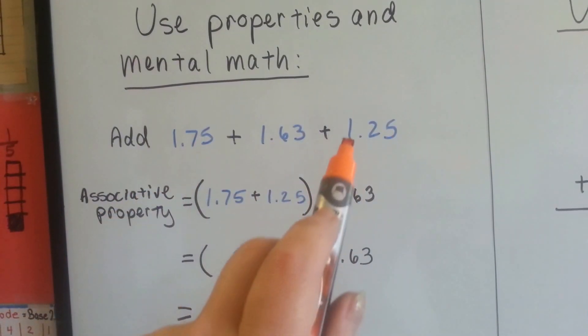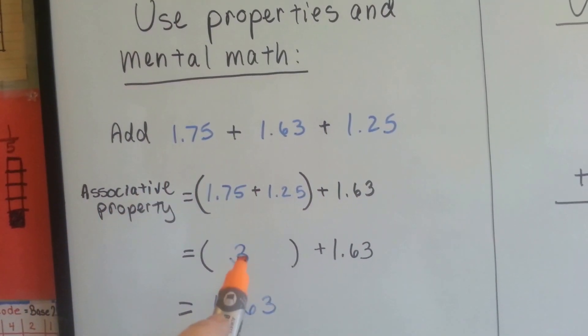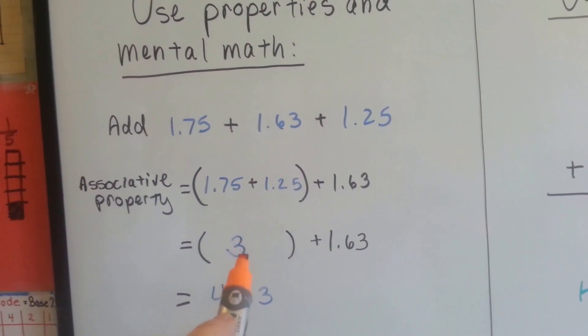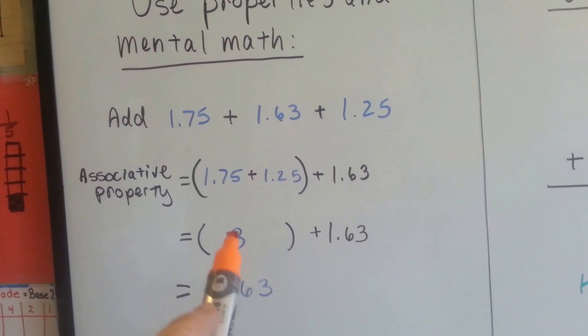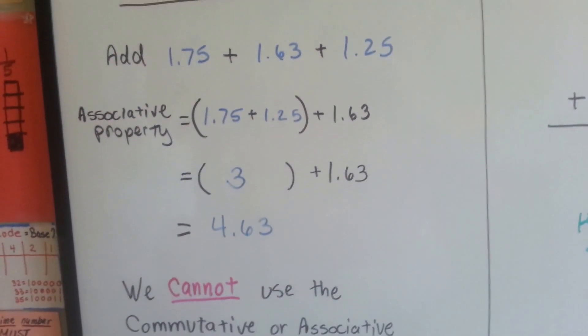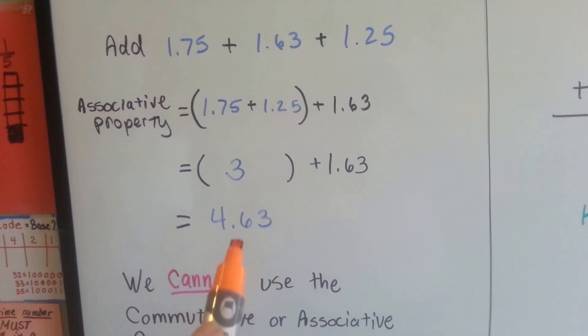So that would be $1, $2, $3. We can do that very quickly, and now we can add the 3 to the 1.63, the $1.63, and get $4.63, or 4 and 63 hundredths.